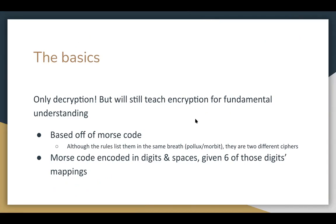For Pollux and Morbid, you don't have to encrypt — which is always good because it's hard to check your work when encrypting — there's only decryption. So you won't need to know how to go from an actual message to Morse code. You'll be given a Morse code message, and given six digit mappings as hints. I'll cover what that means in more detail shortly.